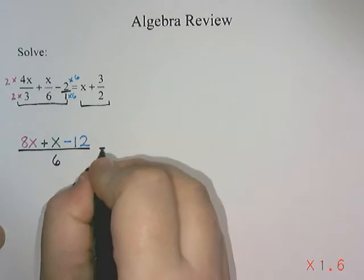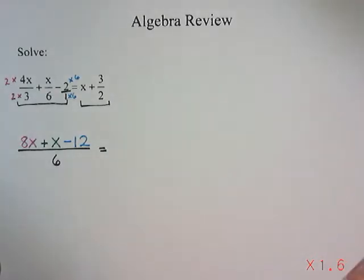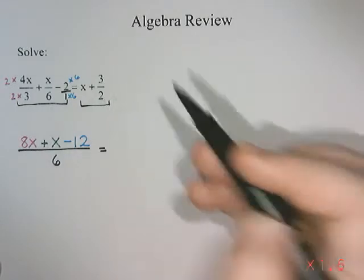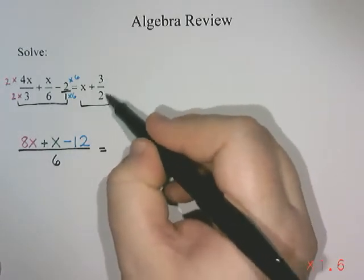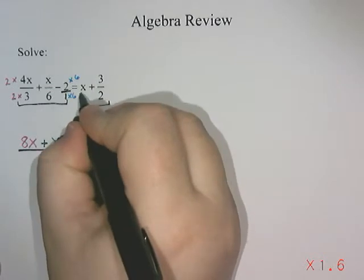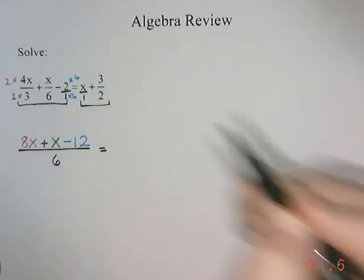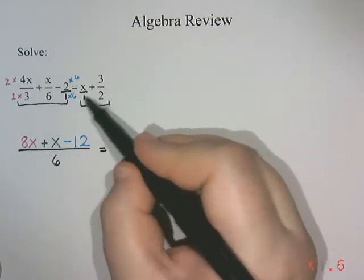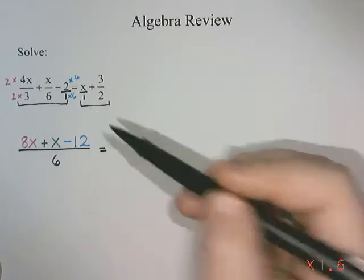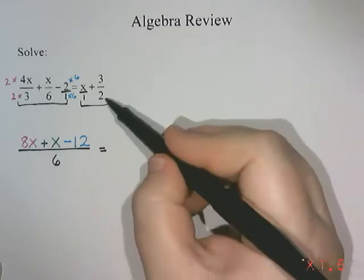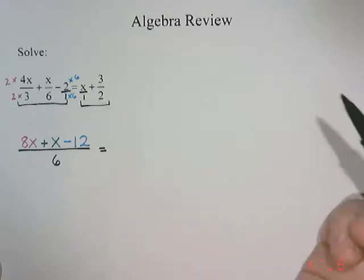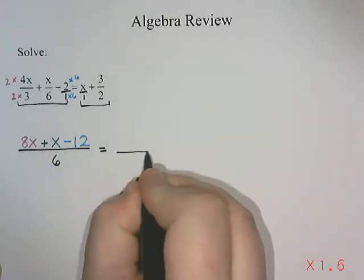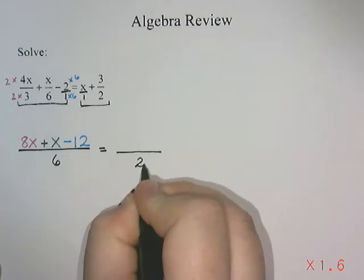Now we're going to do the same thing on the other side of the equation. So I have x and 3 over 2. The 3 over 2 has a denominator of 2, and that x has a secret denominator of 1. So we need a number that 1 and 2 both go into. I always look to the largest number first, 2. Does 1 divide nicely into 2? Yes, it does. So we're going to go on this side for a common denominator of 2.